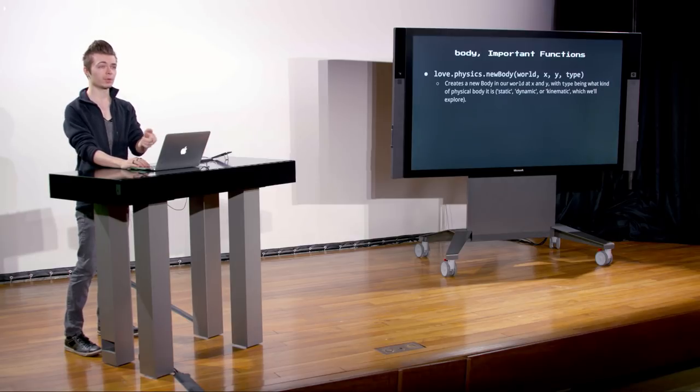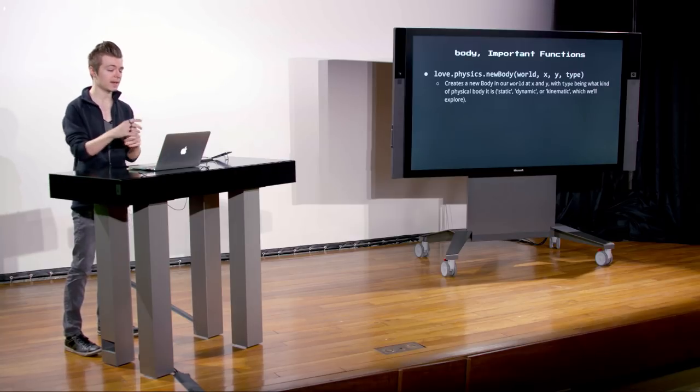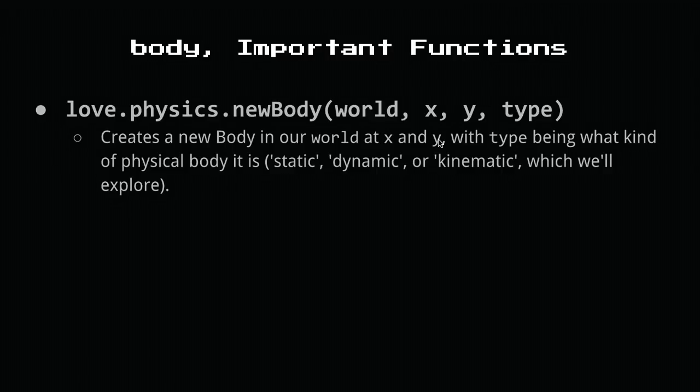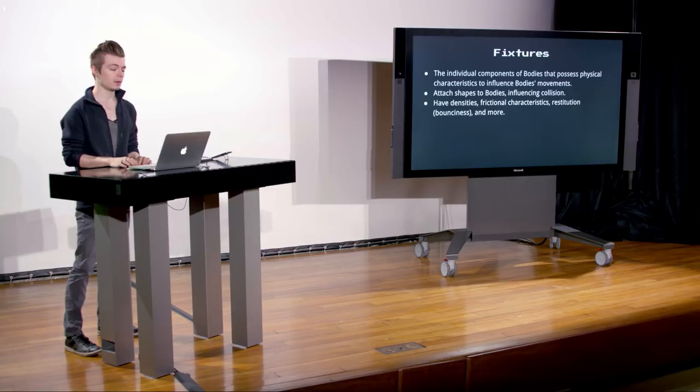The body also gets an x and a y, which places it in the world on instantiation. The last parameter is the type — there are three fundamental types of bodies in Love2D: static, dynamic, and kinematic. That basically influences how it'll interact with the other bodies in our scene. So we have the world encapsulating everything, and then we have bodies — the entities in our game world that have position and velocity. The last key ingredient is fixtures.